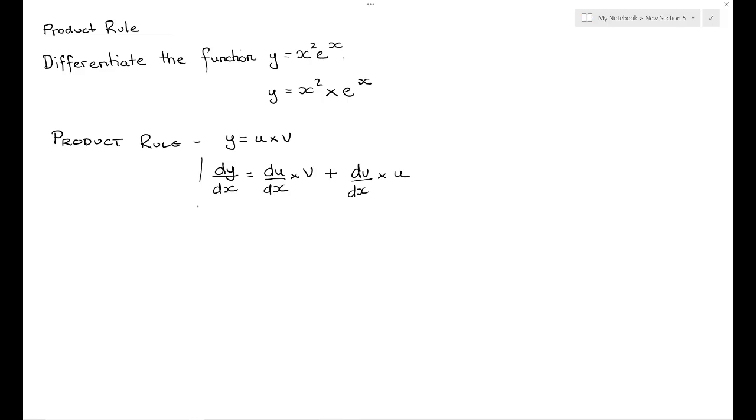So this result here is our product rule. So we're going to apply this rule to help us differentiate the function x squared e to the x. The first thing we should do is define what we call u and what we call v. Now it doesn't matter which we call u and v, so I'm going to say let u be equal to x squared and let v be equal to e to the x.